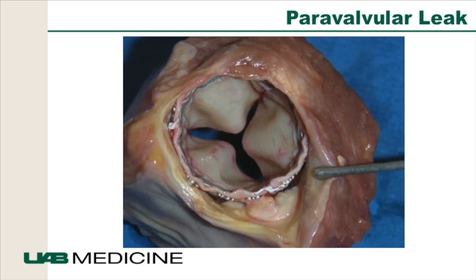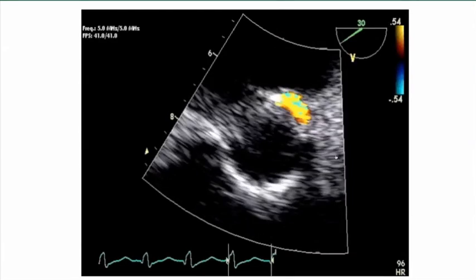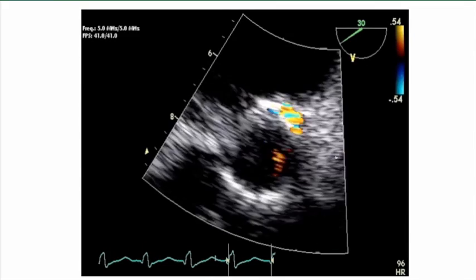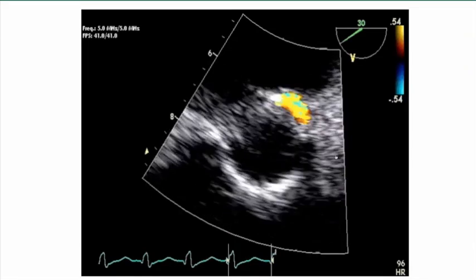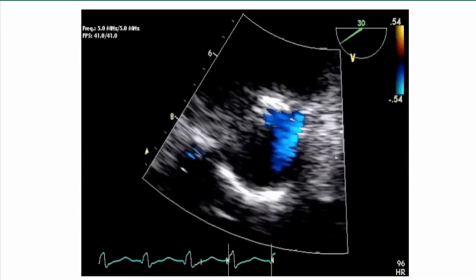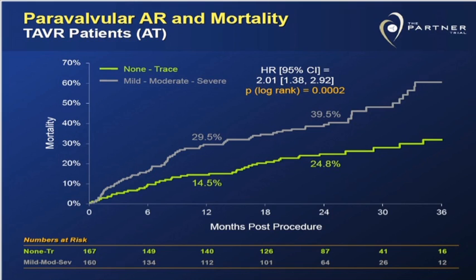Paravalvular regurgitation is another issue. This pathologic specimen shows an area where the valve is not opposed to the aortic annulus — this is where paravalvular leaks originate. This is a typical post-TAVR paravalvular leak in a posterior location, close to the left atrium, appearing to be moderate. In the PARTNER trial, patients with moderate or greater paravalvular leak had higher mortality compared to those with mild or no leak — clearly an association between paravalvular leaks and mortality, though whether it's cause and effect is unknown.